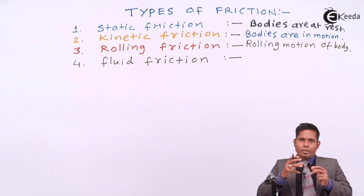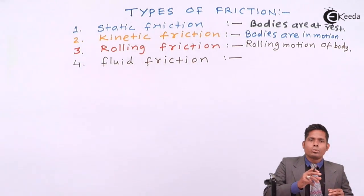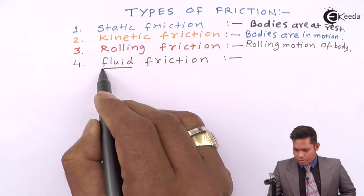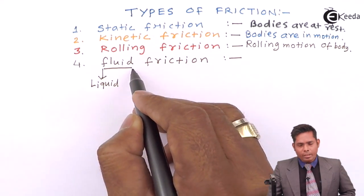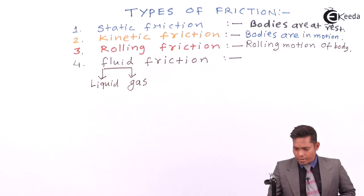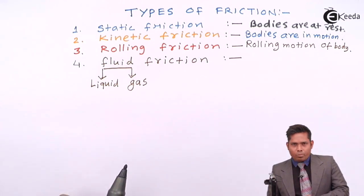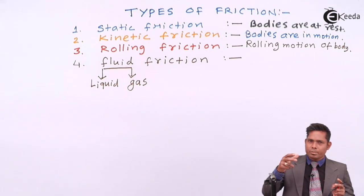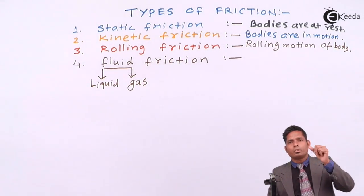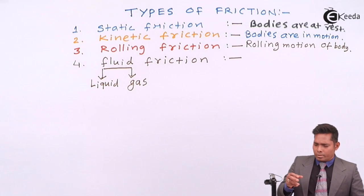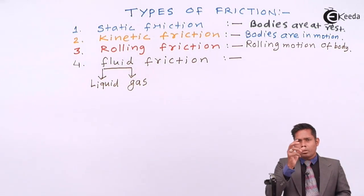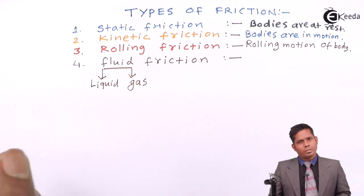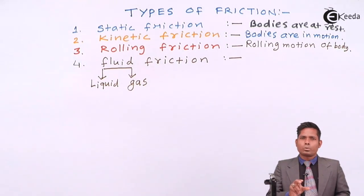Fluid friction acts when any object moves through a fluid. Fluid is a common name for liquid and gas. So when one body moves through a liquid or through a gas, the medium — whether it is a gas or liquid — will oppose the movement of the object through that medium.